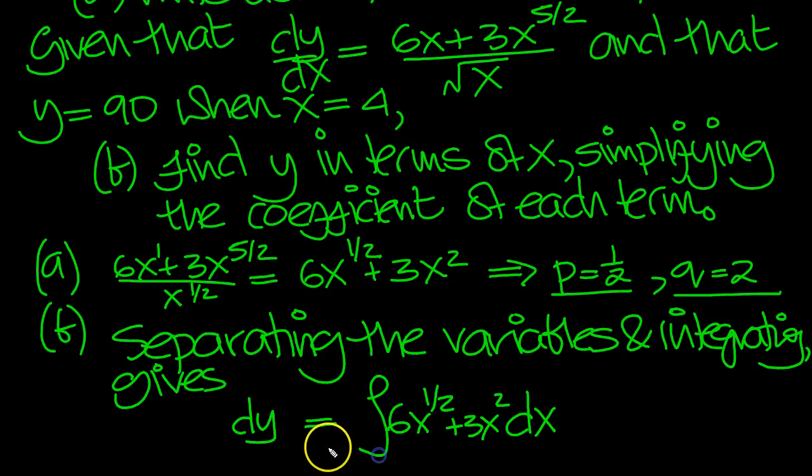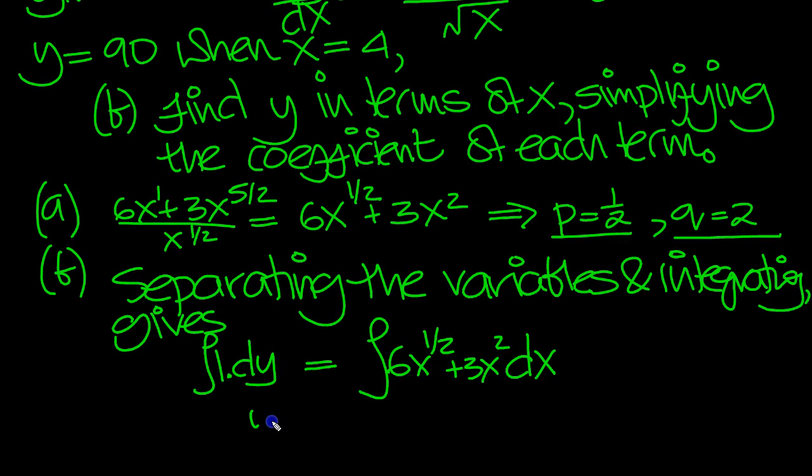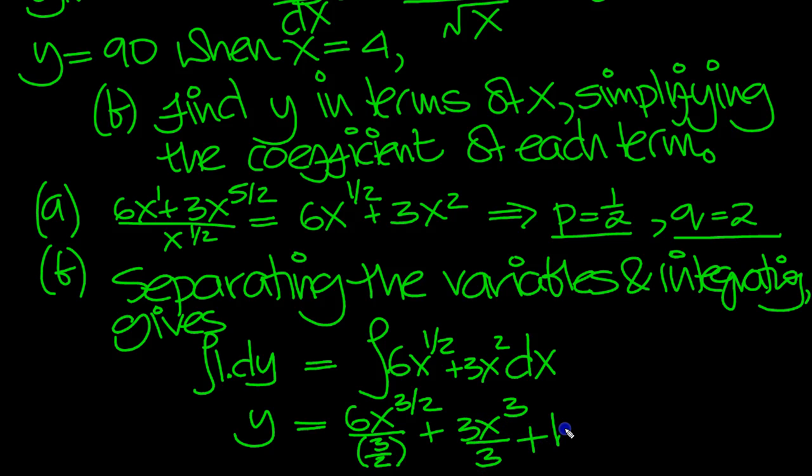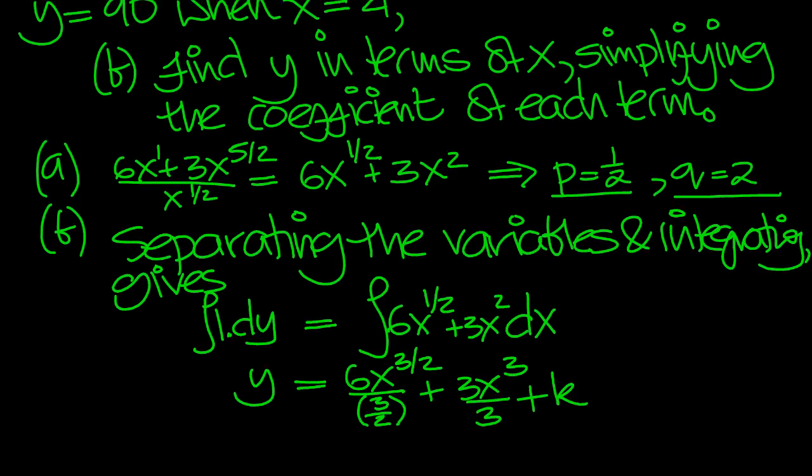So let's do the integral. There's one lot of, of course, here by default. And one integrates to y. One dy integrates to y, of course. Here we've got powers of x. So raise the power by 1. Half increase by 1 is 3 over 2. Divide by 3 over 2. Plus 3x. Increase the power by 1. Divide that by that number, 3. Cubed over 3. Plus k, the constant of integration.